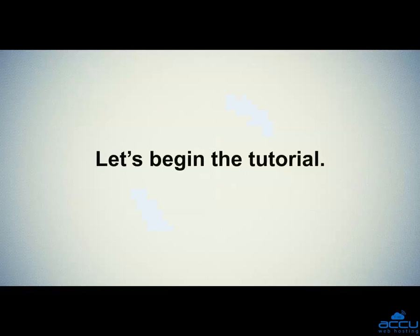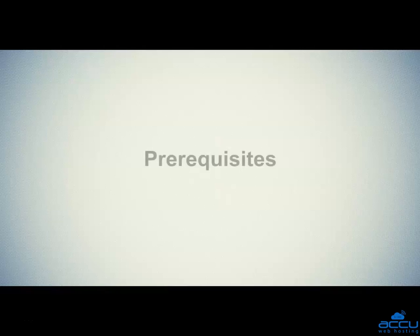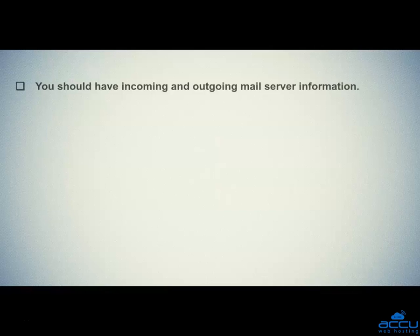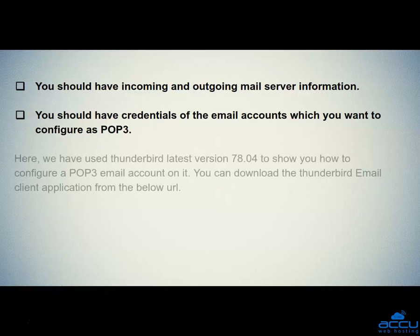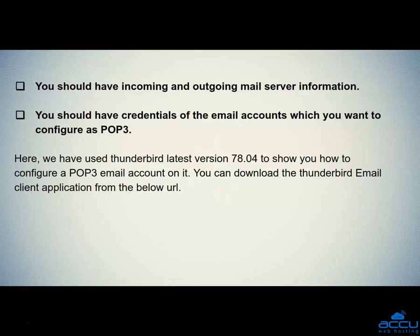Let's begin the tutorial. First, we will see the prerequisites. First, you should have incoming and outgoing mail server information. Second, you should have credentials of the email account which you want to configure as POP3. Here, we have used Thunderbird's latest version 78.04 to show you how to configure a POP3 email account on it. You can download the Thunderbird email client application from the below URL.